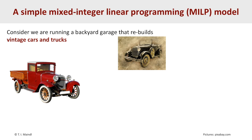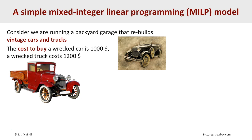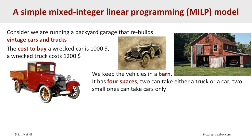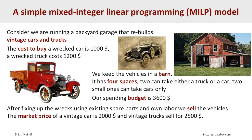The model is about buying and selling used or vintage cars and trucks. We are running a backyard garage that rebuilds those vehicles. The cost to buy a wrecked car is one thousand dollars; a wrecked truck costs one thousand two hundred dollars. The vehicles are kept and restored in a barn that has four spaces — two large spaces that can take either a truck or a car, and two small ones that can take cars only. Our spending budget is three thousand six hundred dollars.